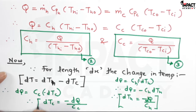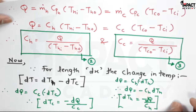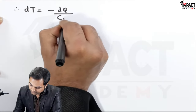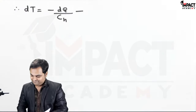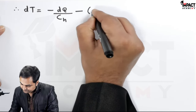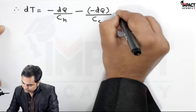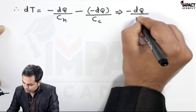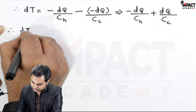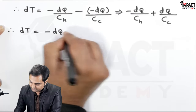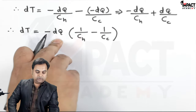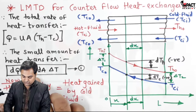Substituting dTh and dTc into dΔT = dTh − dTc: dΔT = (−dQ/Ch) − (−dQ/Cc) = −dQ · (1/Ch − 1/Cc). Now dQ from equation 1 is U · dA · ΔT, so dΔT = −U · dA · ΔT · (1/Ch − 1/Cc).